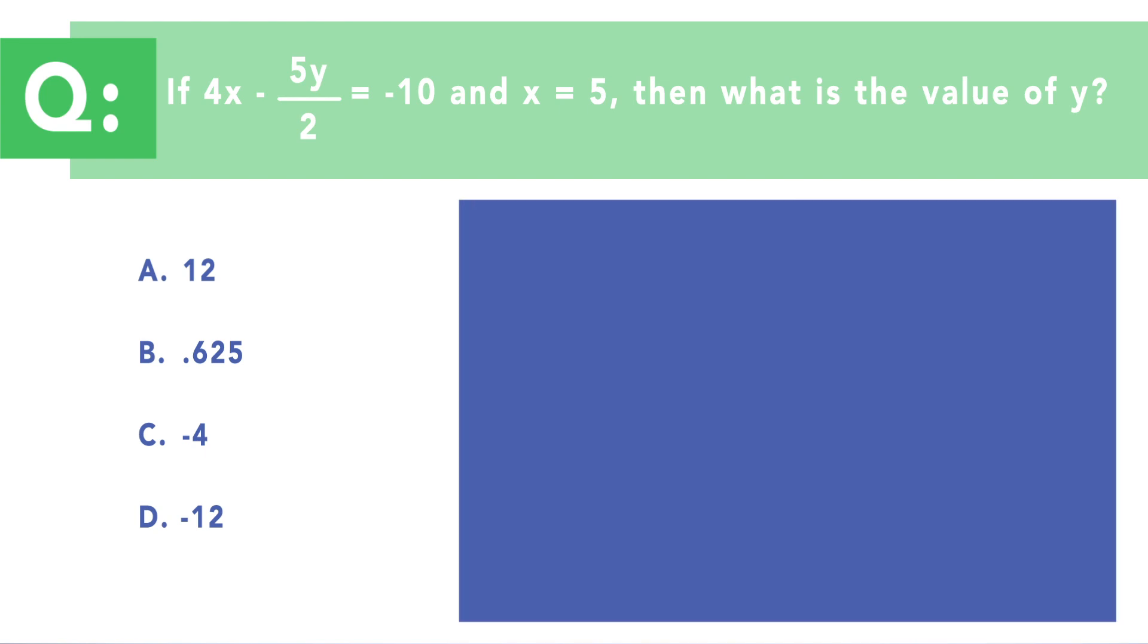Now to answer this question, we begin by substituting in the value of 5 for the variable x in the original equation. So this is going to give us 4 times 5 minus 5y over 2 equals negative 10. So simplification of 4 times 5 can be performed so that the equation simply becomes 20 minus 5y over 2 equals negative 10.